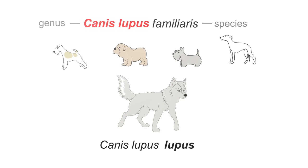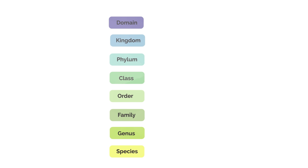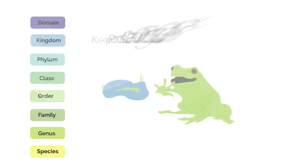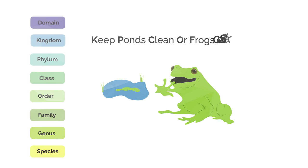Linnaeus also created higher and more inclusive taxonomic categories that encompass an increasingly broader range of organisms. The structure of Linnaeus's taxonomic groups can be seen here. You can make up a little rhyme or acronym to remember this, such as keep ponds clean or frogs get sick.